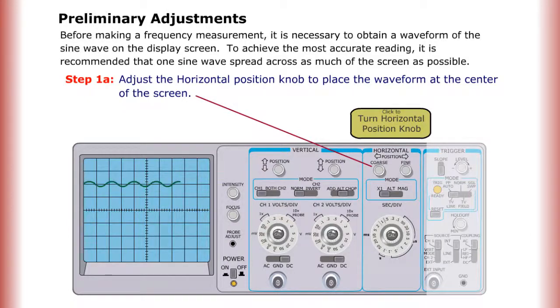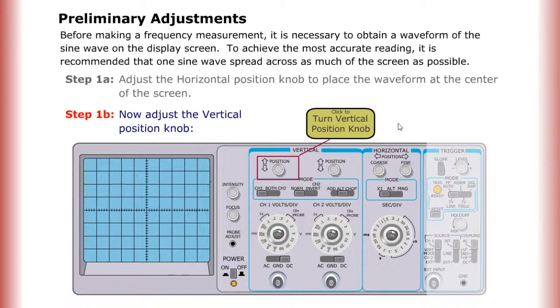Step 1a: Adjust the horizontal position knob to place the waveform at the center of the screen. Step 1b: Now adjust the vertical position knob.